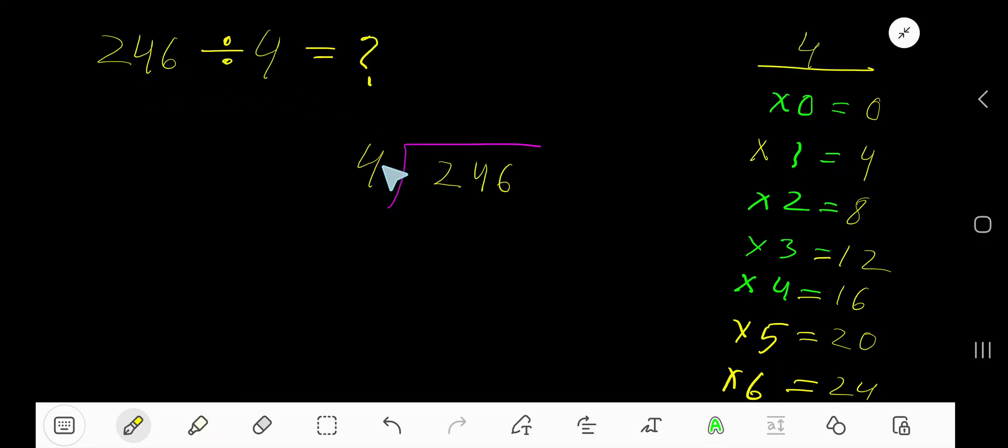246 divided by 4. Here 4 is the divisor, so we need the multiplication table of 4: 4 times 0 is 0, 4 times 1 is 4, 4 times 2 is 8, 4 times 3 is 12, 4 times 4 is 16, 4 times 5 is 20.